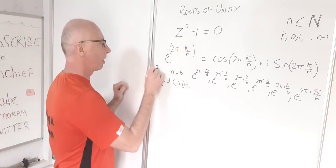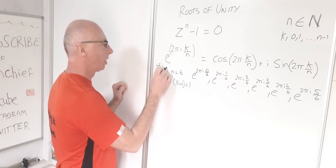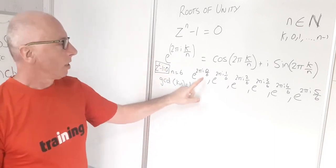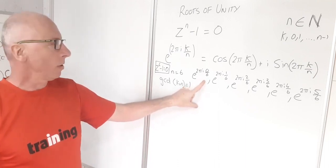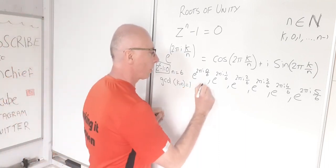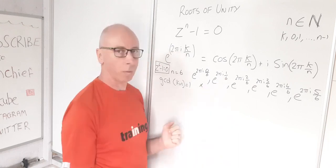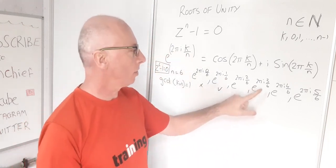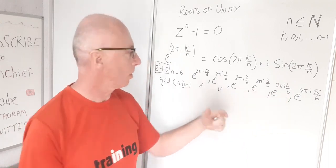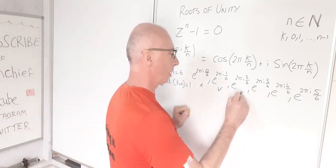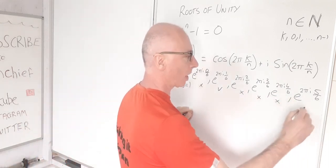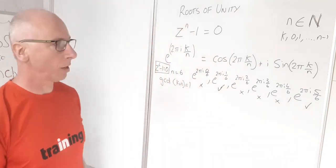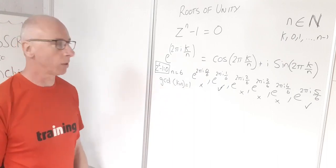Looking at z^6 minus 1, we check which values are co-prime with 6. k=0 is not primitive; k=1 and 6 are co-prime, so that's primitive. k=2, 3, and 4 are not co-prime with 6, so those are not primitive. k=5 and 6 are co-prime, so those are the primitive roots of unity.